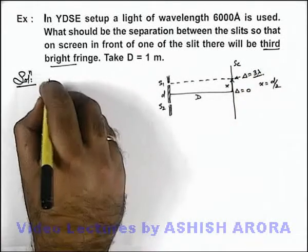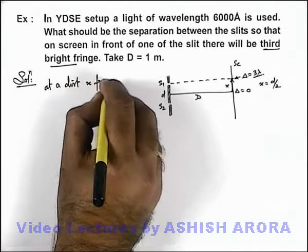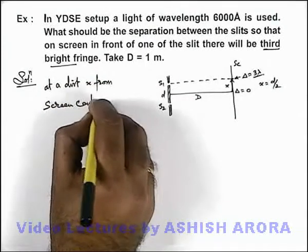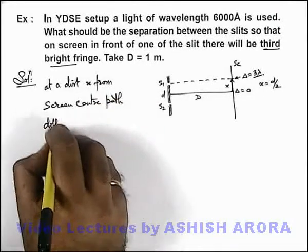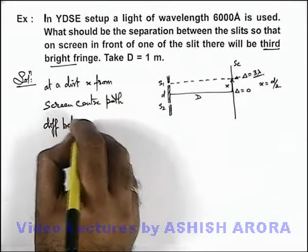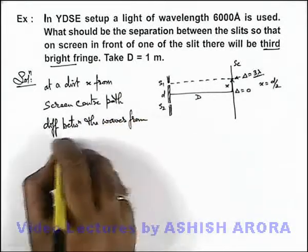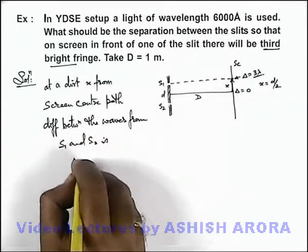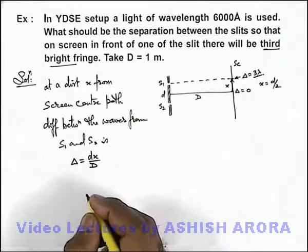And we know at a distance x from screen center, path difference between the waves from S1 and S2 is - this path difference delta, we know it is given as dx by capital D, we already studied it.